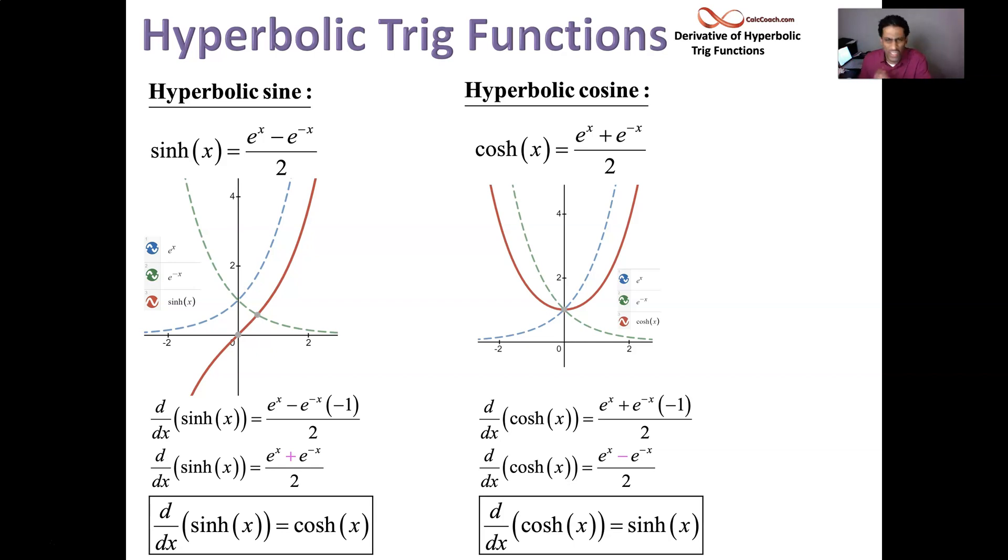What else do you know about these guys? They're symmetric. When you put in negative x to replace the x, you end up with the opposite of what you start with as far as hyperbolic sine goes. Negative 1 times your original. That's called being odd.